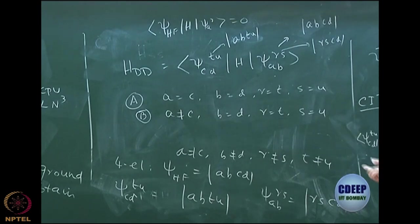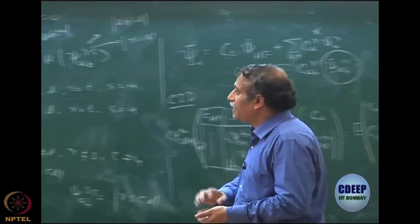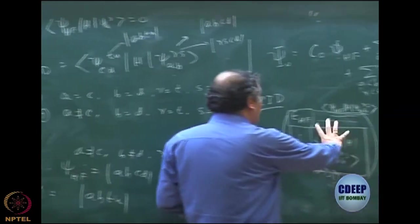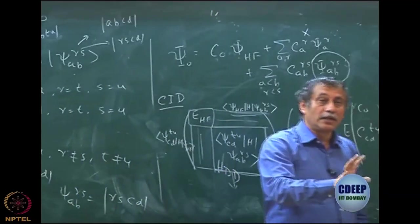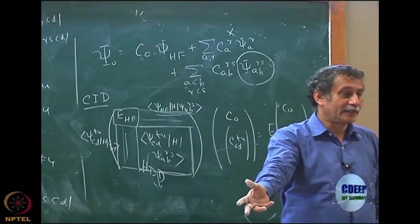There are 3 occupation difference, which are also zero. Only up to 2, they will remain. The point that I am trying to say that this block will have lots of zeros coming from Slater rule, and then again further because of spatial symmetry.